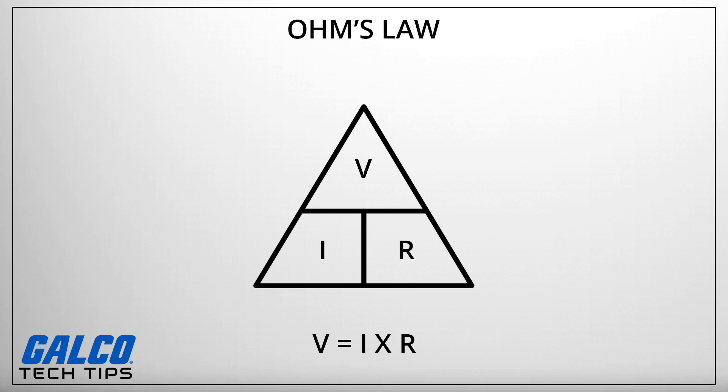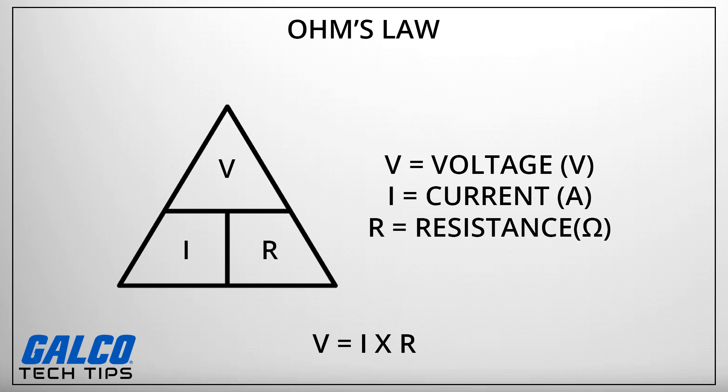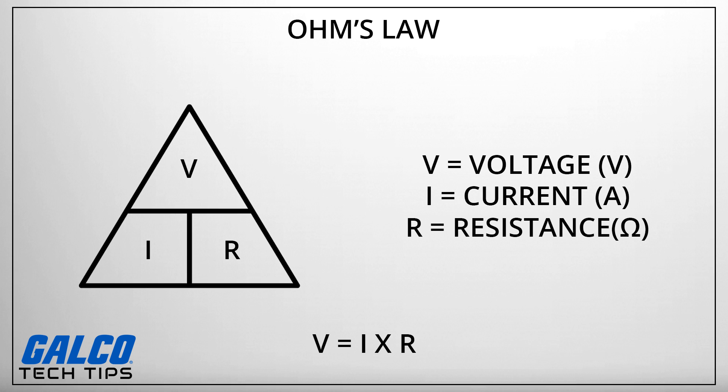V equals I times R. In this formula, V stands for voltage, measured in volts. I stands for current, measured in amps. And R stands for resistance, measured in ohms.